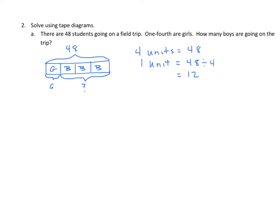three units of boys. So we continue. Three units equals 3 times 12 equals 36. And we'd write the statement, 36 boys are going on the field trip.